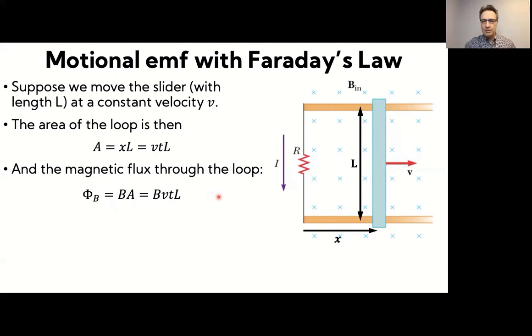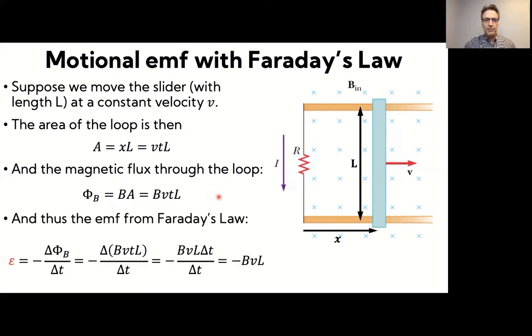And so now we can use Faraday's law to figure out what the magnitude is of the EMF. So Faraday's law says the EMF is minus the rate of change of the magnetic flux. So it's minus the rate of change of BVTL.